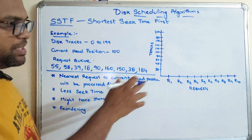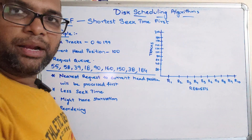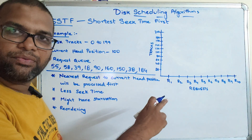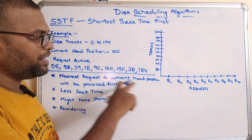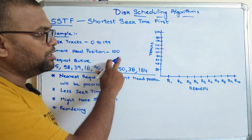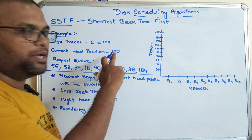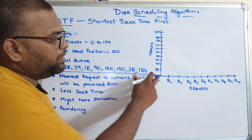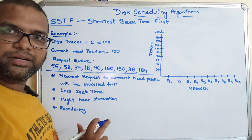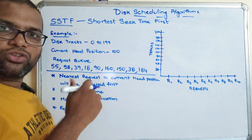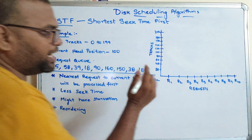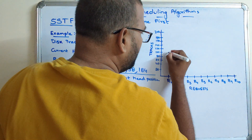Now let us represent the same thing in a graph. The x-axis represents the requests — 10 total, including the current head position, which we consider as the first request. The y-axis represents the track numbers. Let us see how it can be implemented. The current position is at 100, so R1 is at 100.